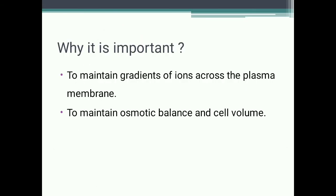The ionic gradient gets disturbed when a nerve impulse comes. During membrane depolarization, sodium ions influx — they enter inside the cell — and potassium ions efflux — they move outside the cell. To restore the concentration of sodium ions higher outside the cell and potassium ions higher inside the cell, the sodium potassium pump is required.